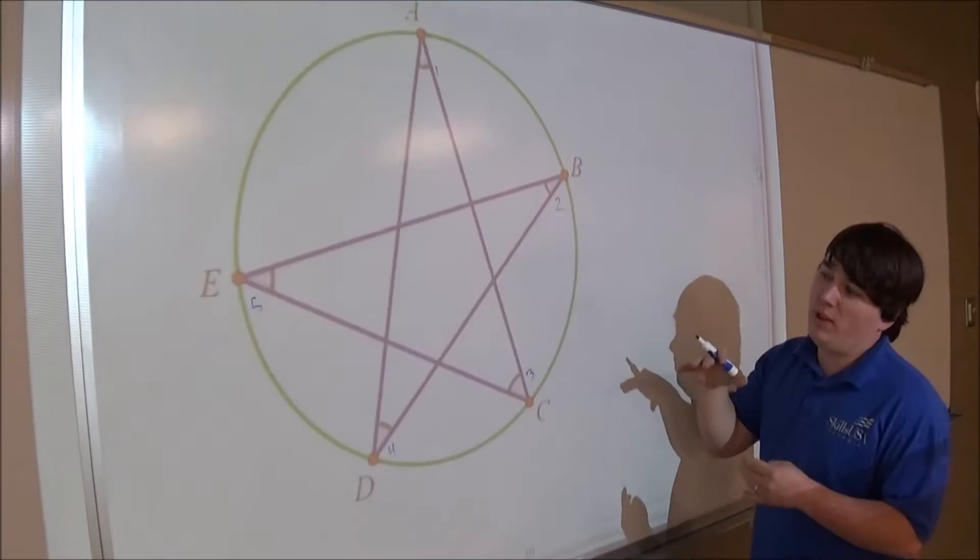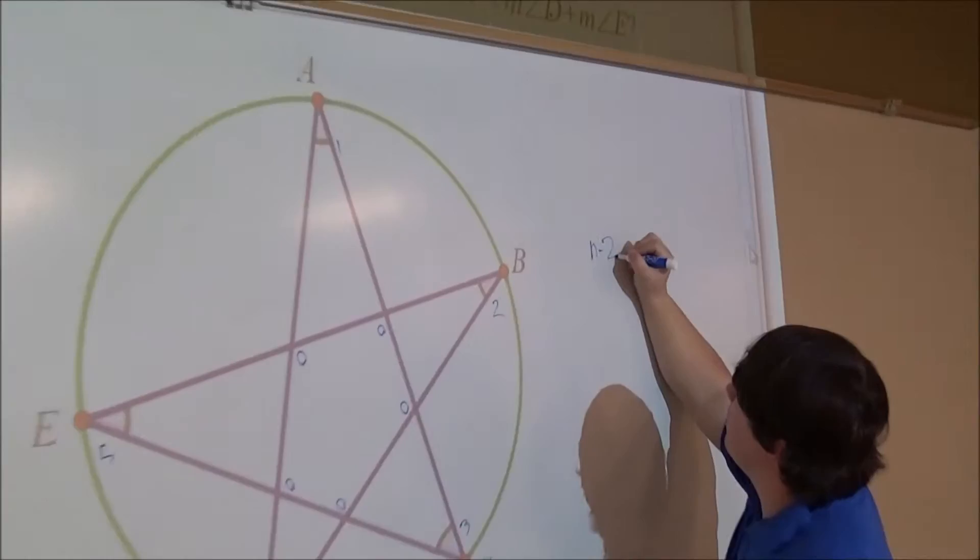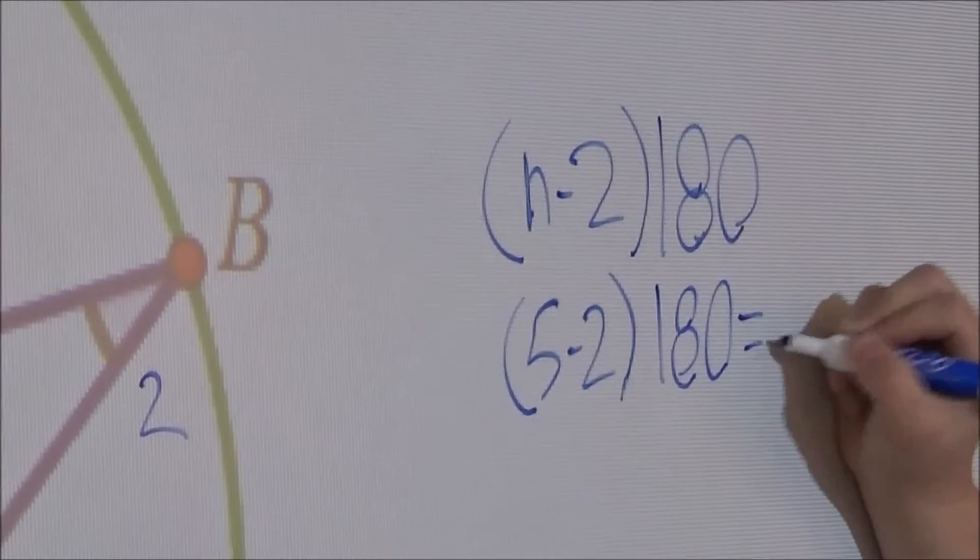To solve this equation I'm going to use what I know about polygons. There's a pentagon in here and I know that the sum of all interior angles of a polygon equal N minus 2 times 180. That becomes 5 minus 2 times 180, which equals 540.